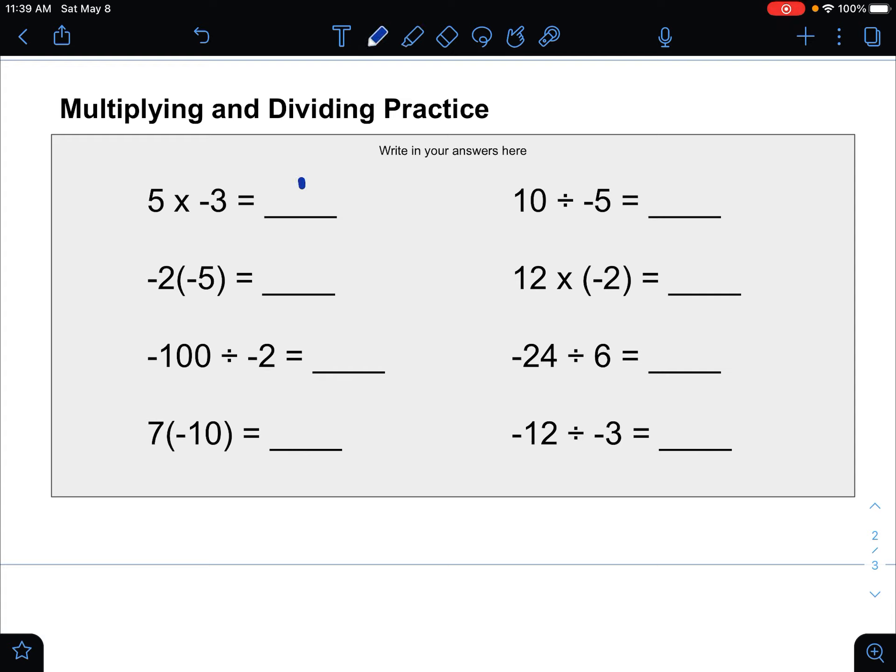So 5 times 3 for the first one would be 15, then there's one negative, the answer is negative. Because two negatives are going to make a positive with multiplying or dividing, and one negative is going to make it negative.